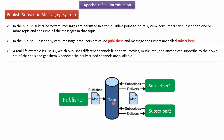In the publish-subscribe system, message producers are called publishers and message consumers are called subscribers. A real-time example is Dish TV, which publishes different channels like sports, movies, music, etc. Anyone can subscribe to their own set of channels and get those channels whenever their subscribed channels are available.